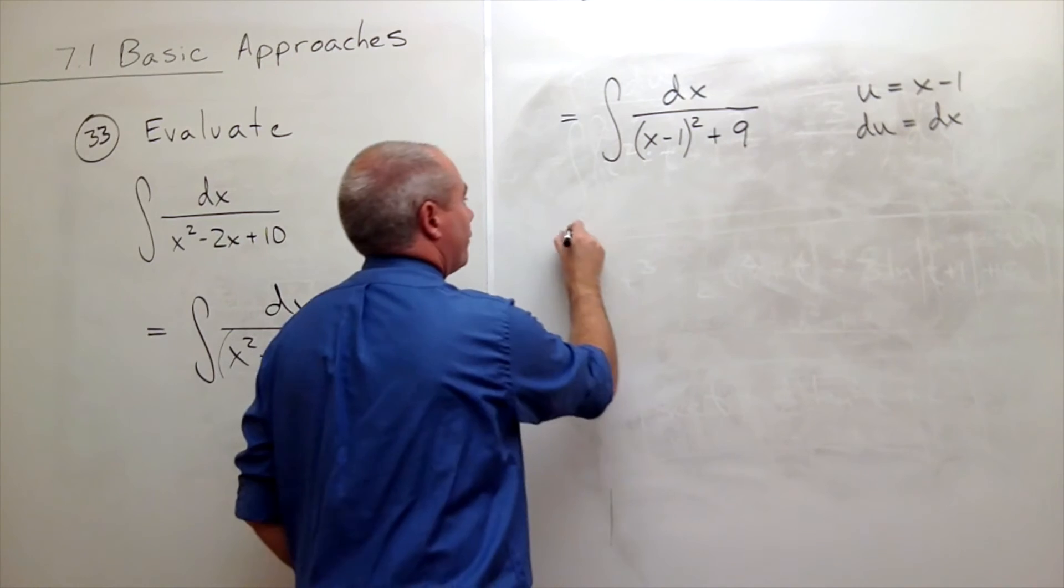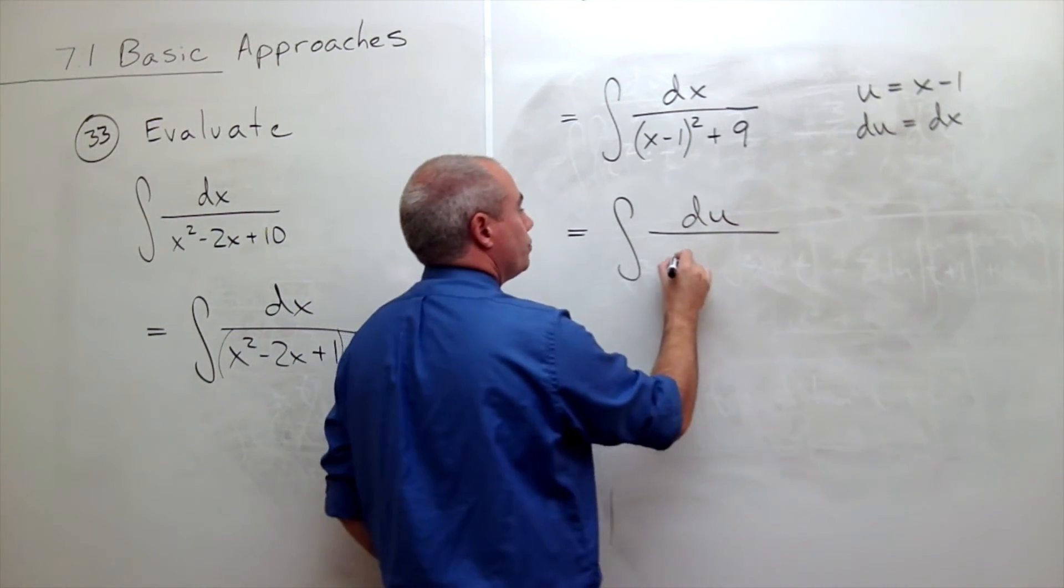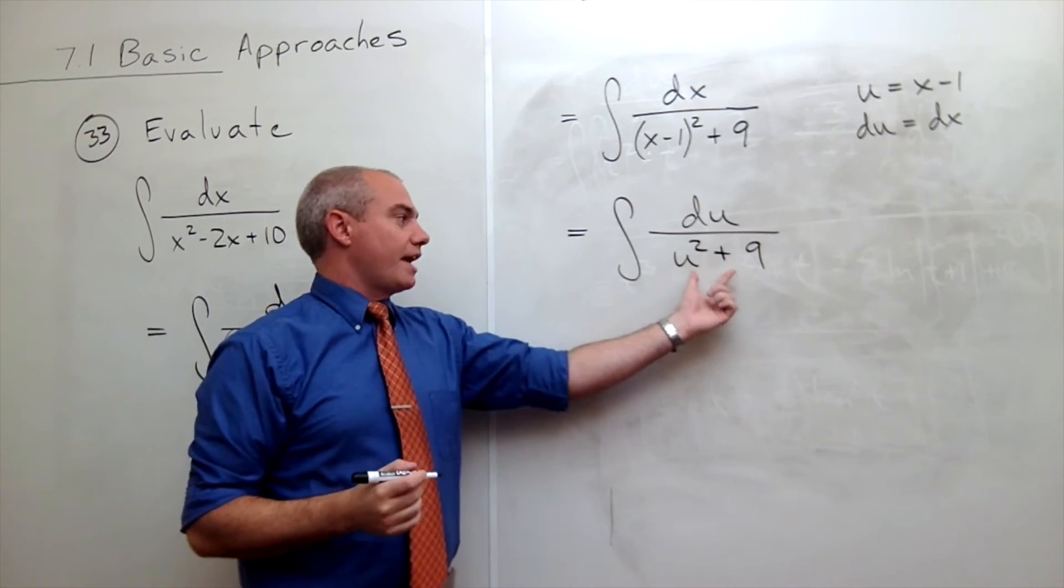So now I could rewrite this as the integral of du over u squared plus 9. But now this is a very clear tan inverse,